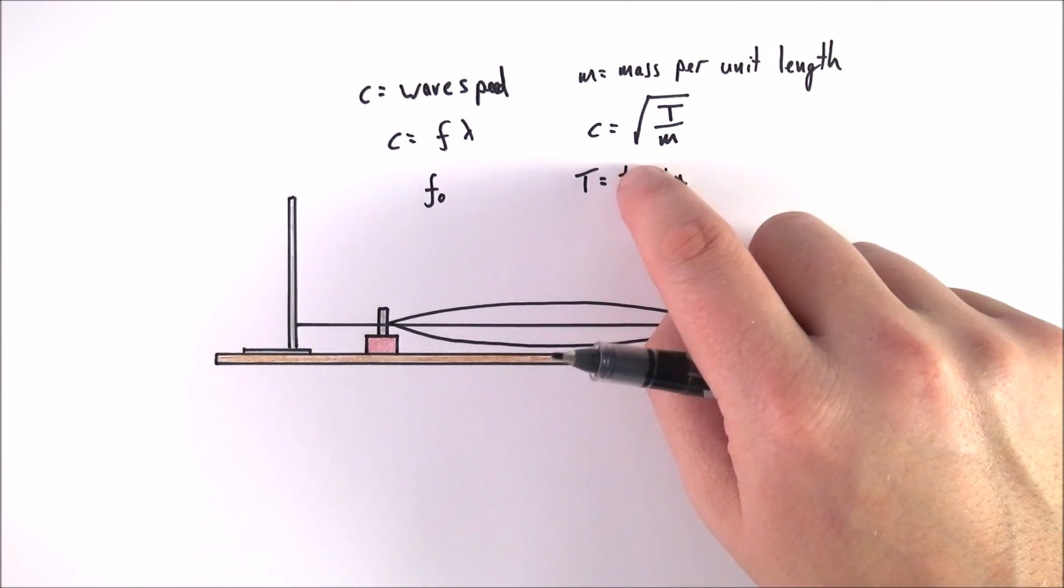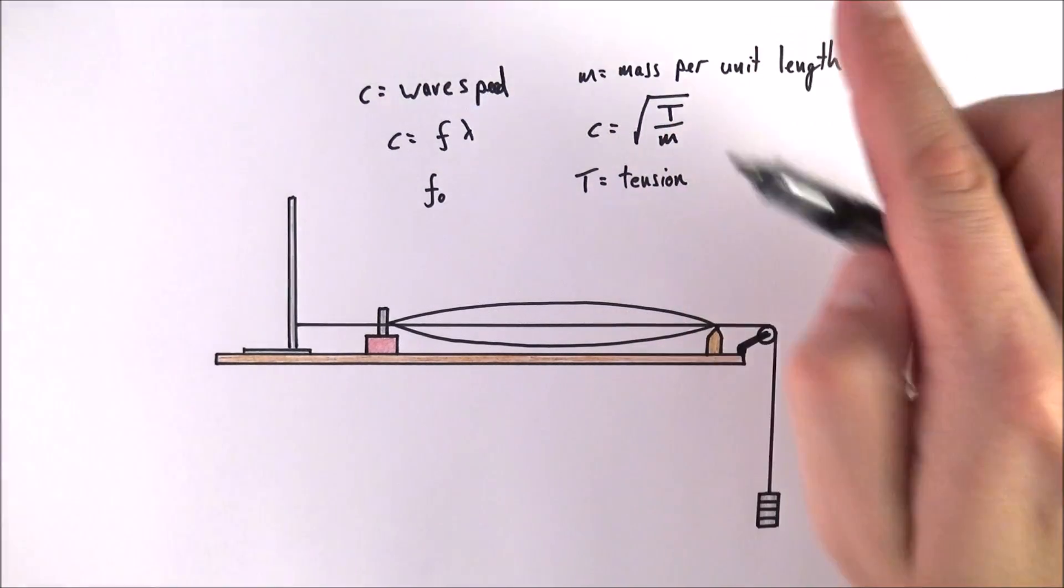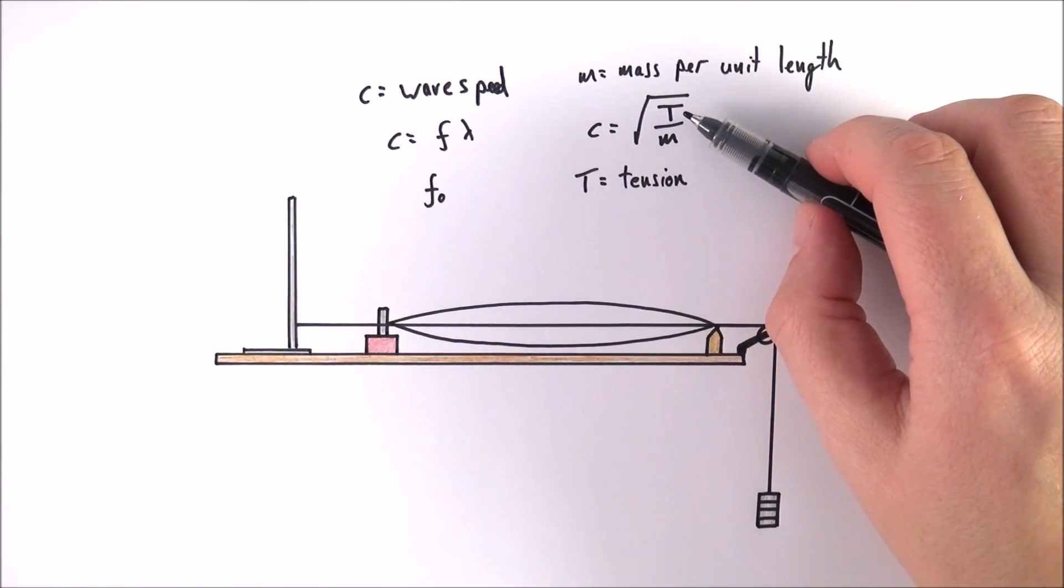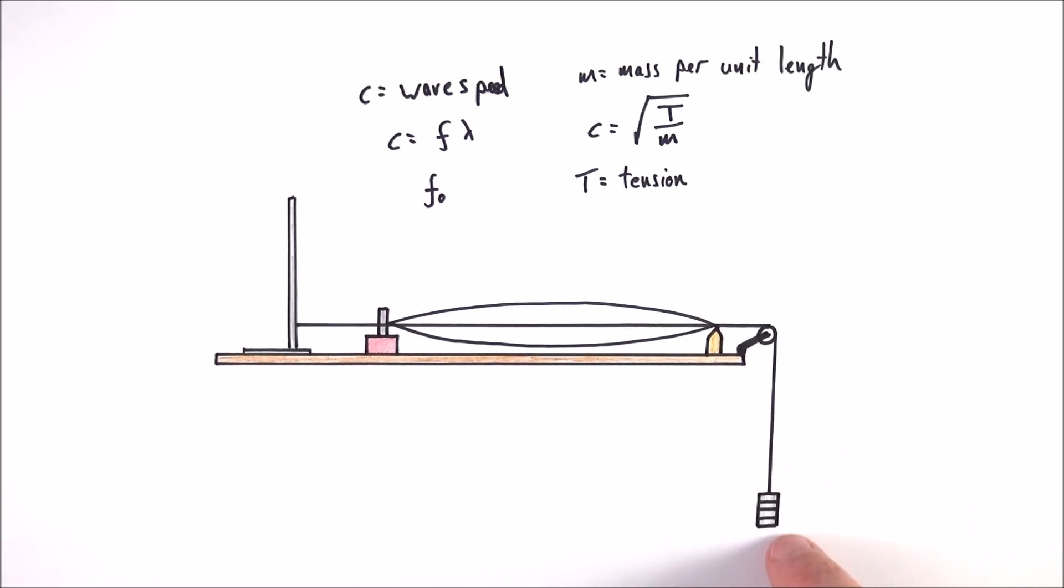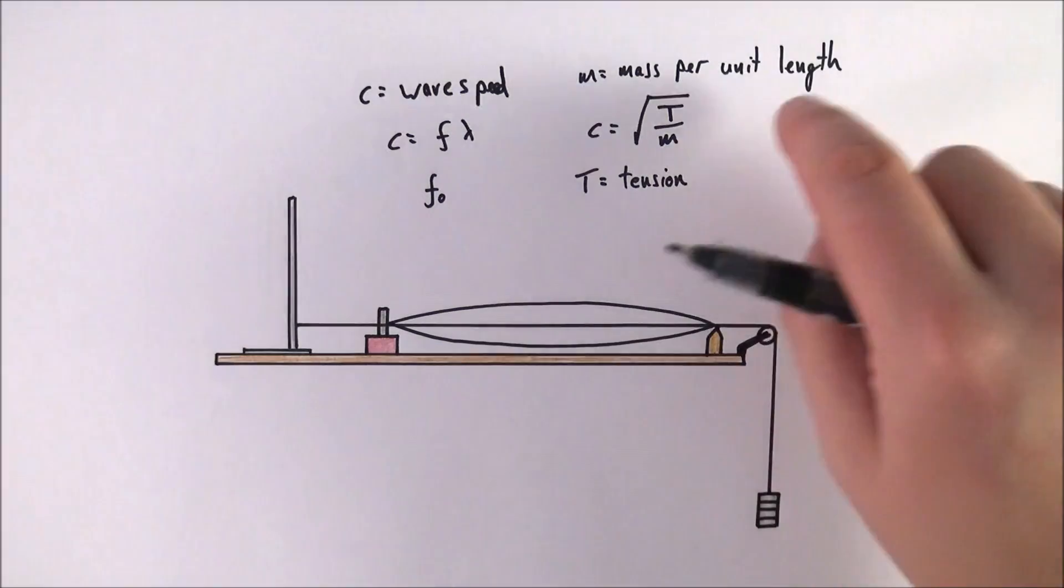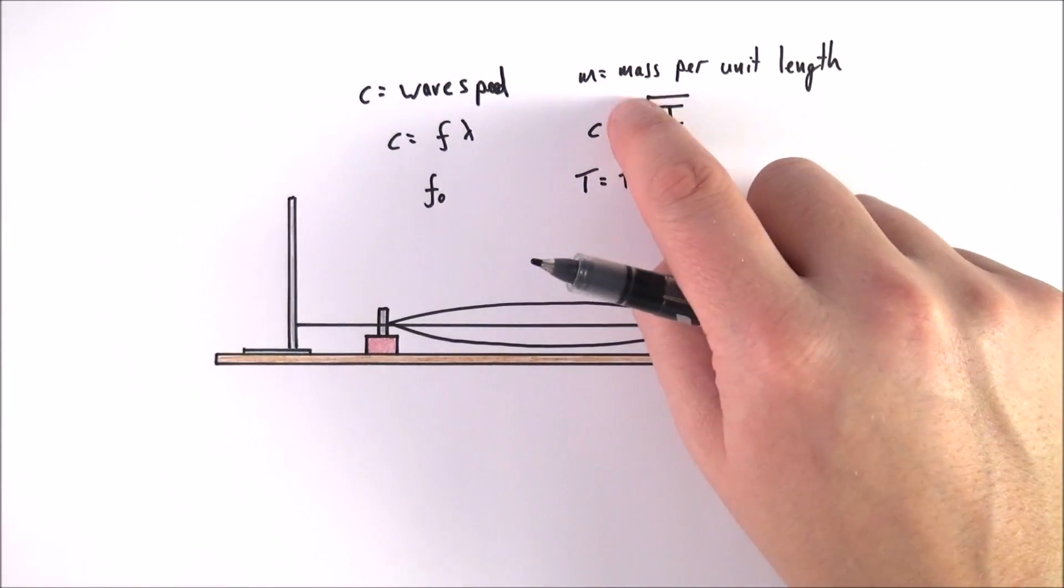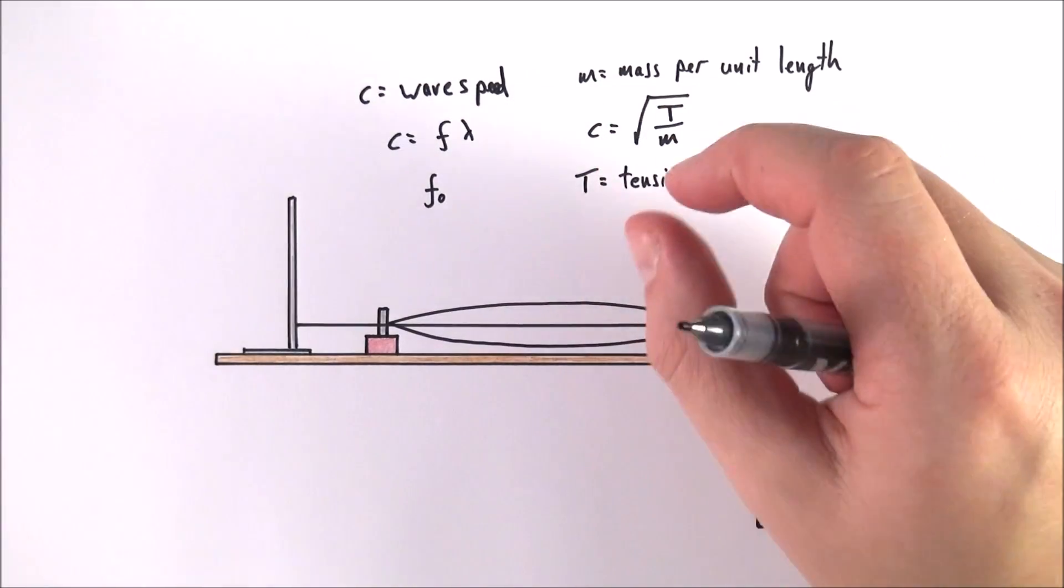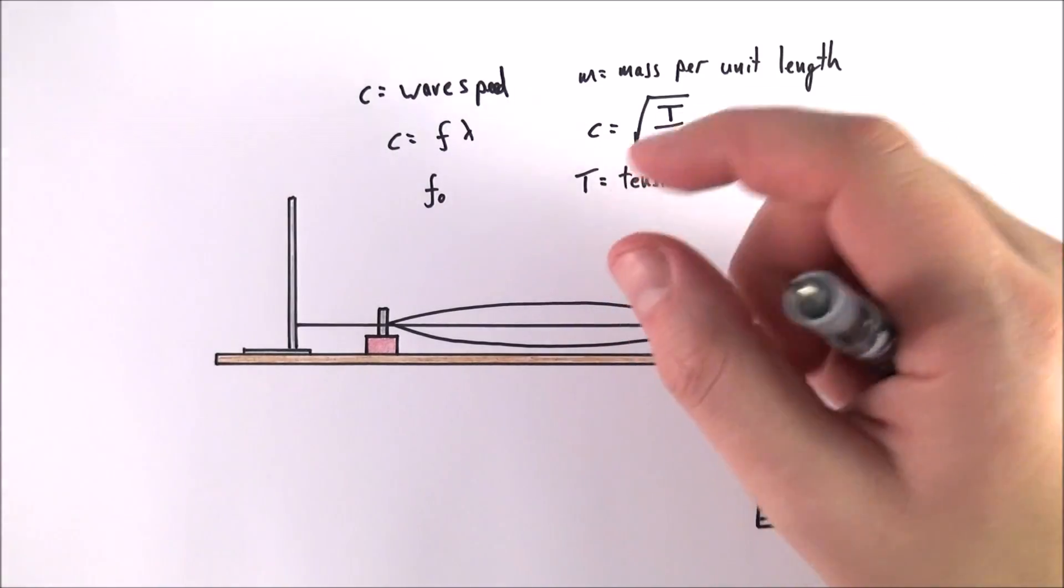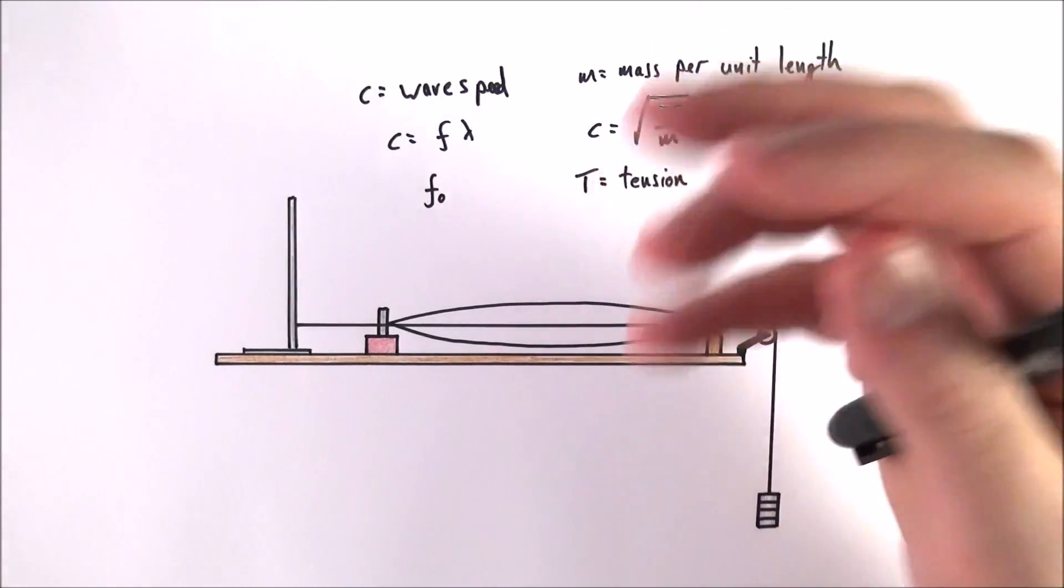Something else that you might not be so familiar with is that c is also equal to the square root of T over m, where T is the tension in newtons, which is provided by the mass, and m is the mass per unit length of the string. It's quite easy to find the mass per unit length; all you need is a meter of string and then you put it on a mass balance and work out your mass per unit length in kilograms per meter.